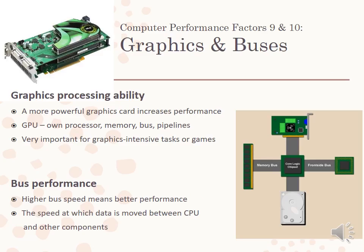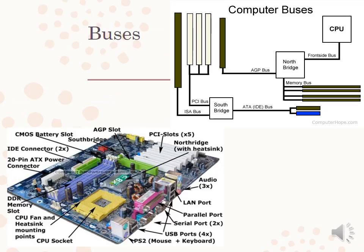The graphics card or graphics CPU helps improve performance because it takes some of the work away from the CPU, so a more powerful graphics card is important for power users. Bus performance: if you have a higher bus speed, you will have better performance. The bus speed refers to the speed at which data is moved between the CPU and the other components. You have many buses in your computer — the front side bus, the AGP bus, the memory bus, and many others — and faster bus speed will help performance.